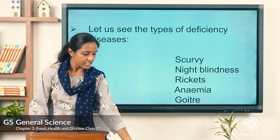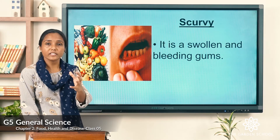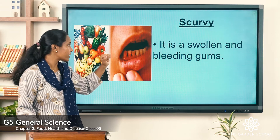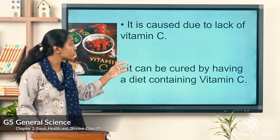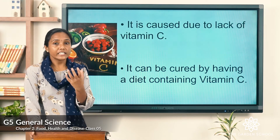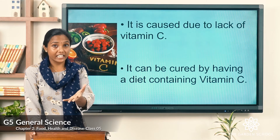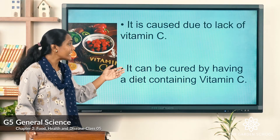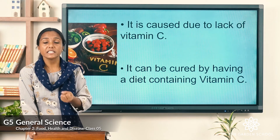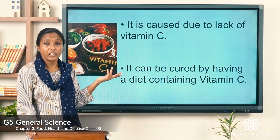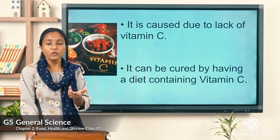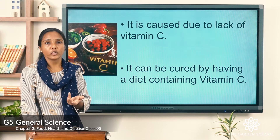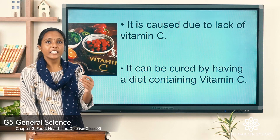Let us look at scurvy. When you are suffering from scurvy, you have swollen and bleeding gums, as you can see in the picture. This is caused due to lack of vitamin C. If your diet is lacking vitamin C, you will suffer from scurvy. It can be cured by having a diet rich in vitamin C — foods like orange, milk, and eggs — taking the right amount of vitamin C daily.